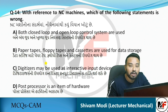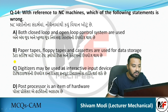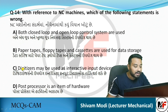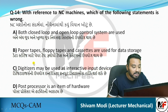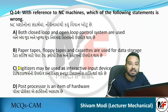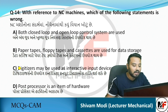Next MCQ: With reference to NC machines, which of the following statements is wrong? Option: both closed loop and open loop control systems are used – that is correct. Data storage using paper tape, floppy, cassettes – that is correct. Option C: digitizers can be used as interactive input devices. Friends, digitizers – like mobile font tablets – are not used in NC or CNC machines as any type of input device, so that statement is wrong. The answer is C.